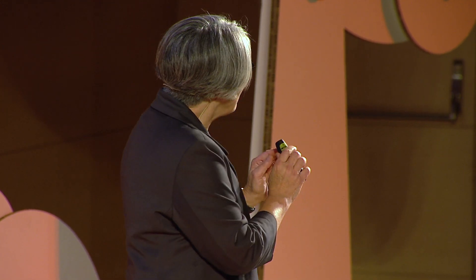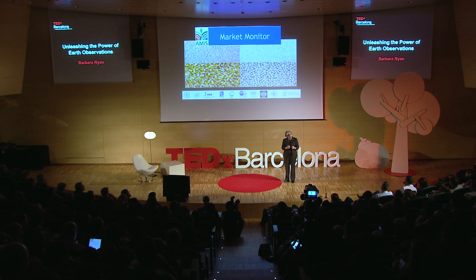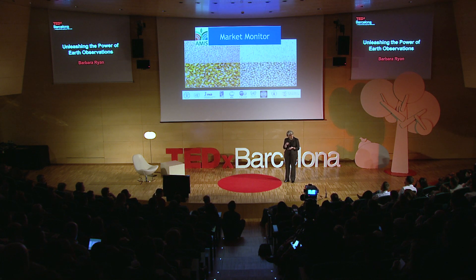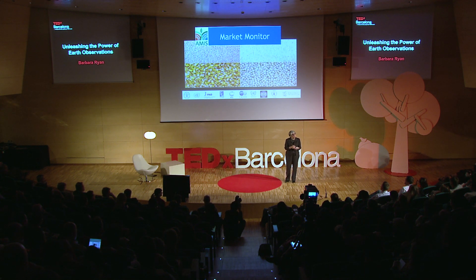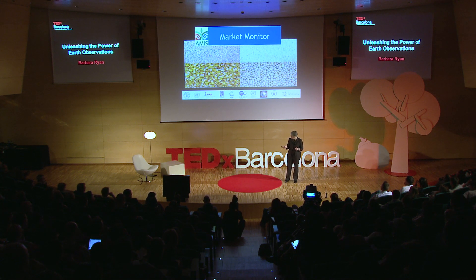At about that time, the G20 agricultural ministers said let's bring the marketing people together — the Agricultural Market Information System, or AMIS — with the Earth observation people, so that we can start looking at this entire system in a much more globally transparent way. We know there are many forces that contribute to wheat prices, but let's at least take advantage of Earth observations. We will not be able to do this unless we have broad open data policies from all satellites and those terrestrial land-based sensors.